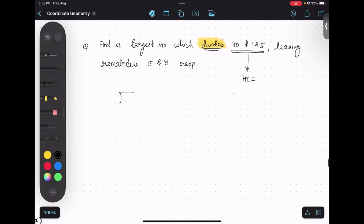Now, the interesting thing is, when we are dividing 70 by x, the remainder should be 5. And when we are dividing 125 by x, the remainder should be 8.